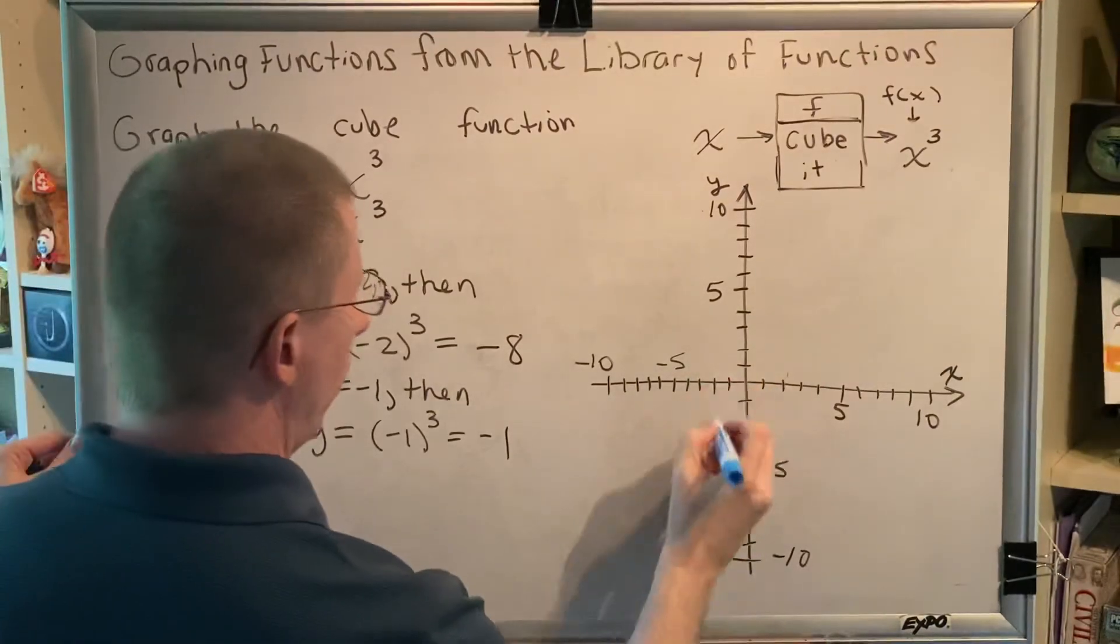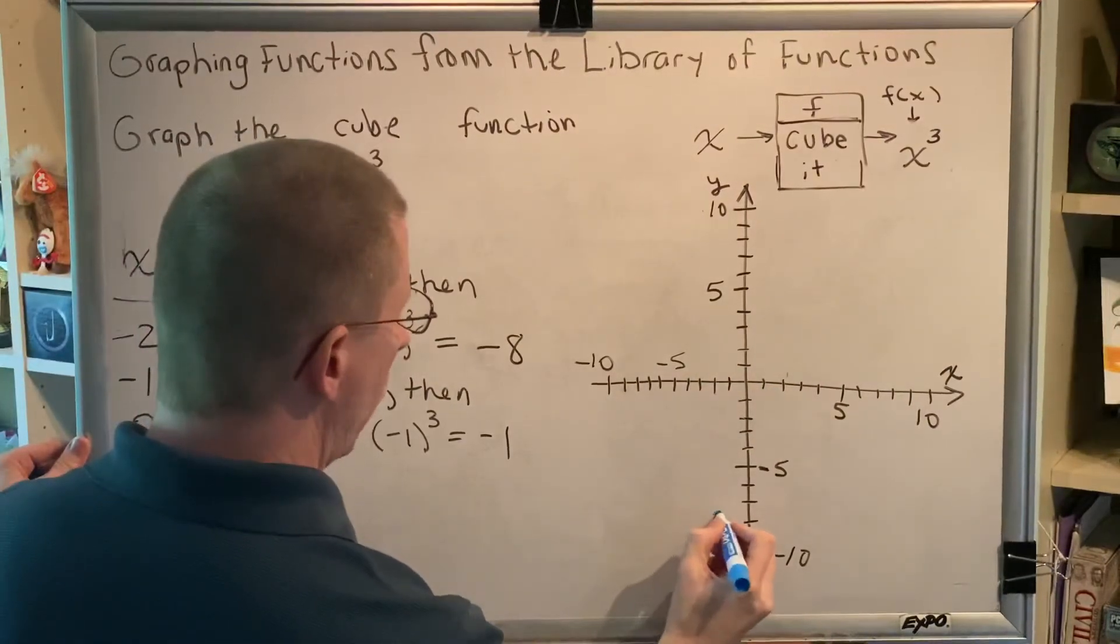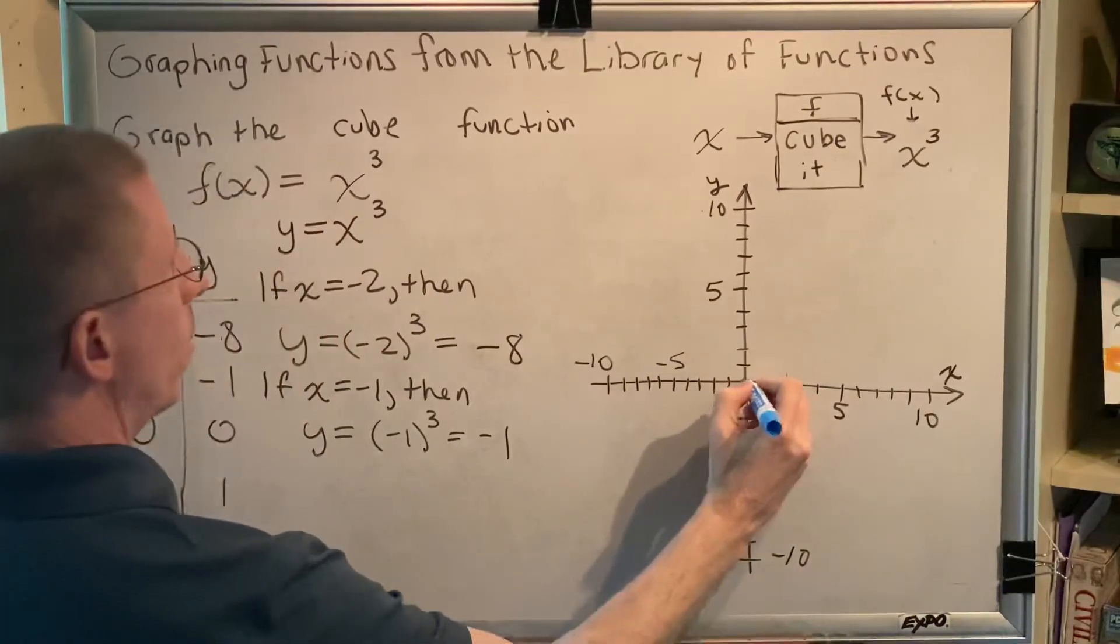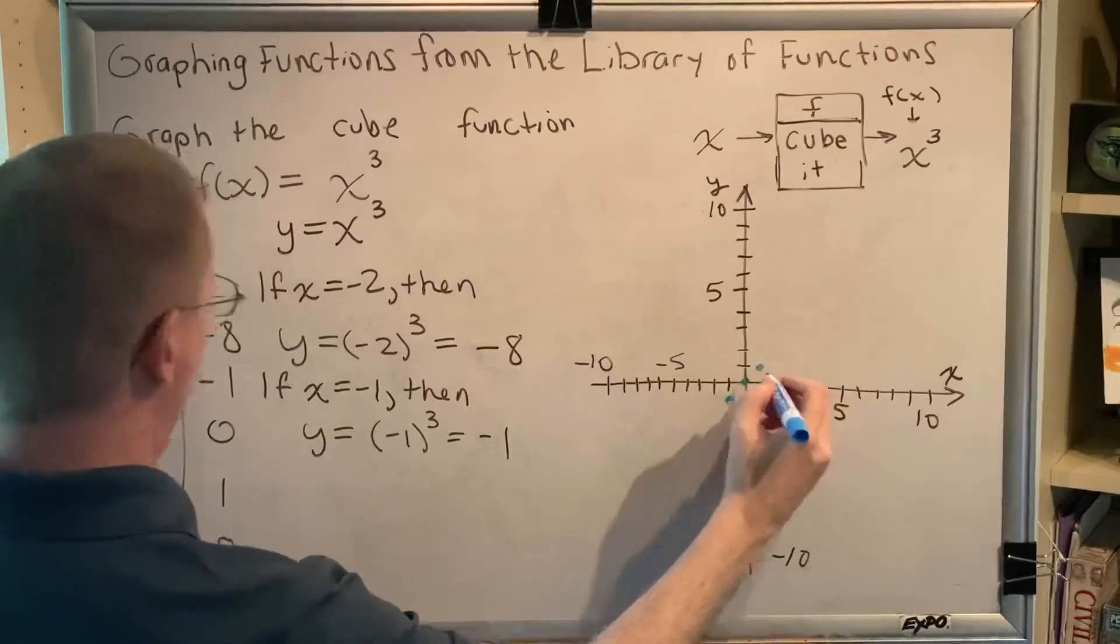Negative 2, negative 8, so it's 2 to the left, 8 down, which would be here. Negative 1, negative 1, which is here, 0, 0, 1, 1, and 2, 8.